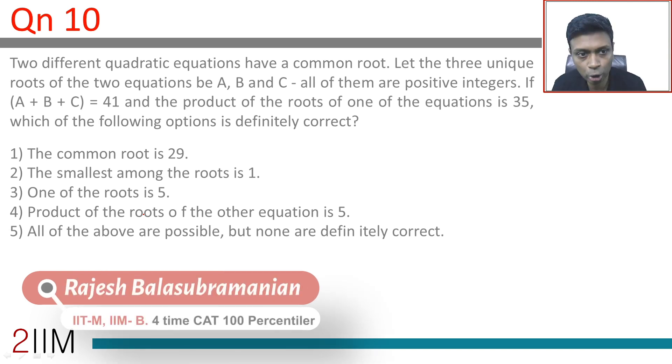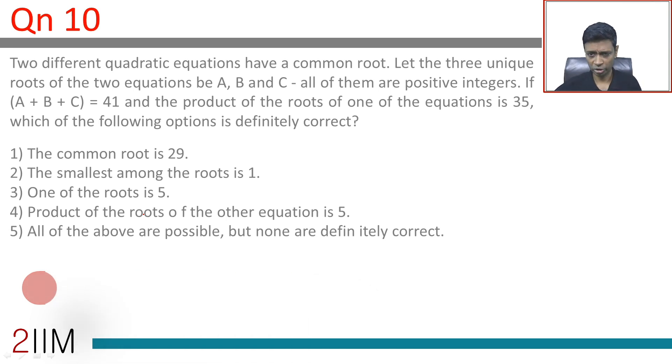It's a wonderful question. Two different quadratic equations have a common root. Let the three unique roots of the two equations be A, B, and C. All of them are positive integers. So big number sitting here. All three are unique, so attention to detail is very important.